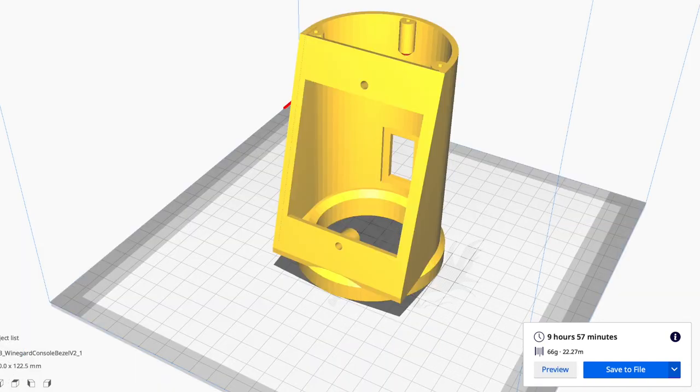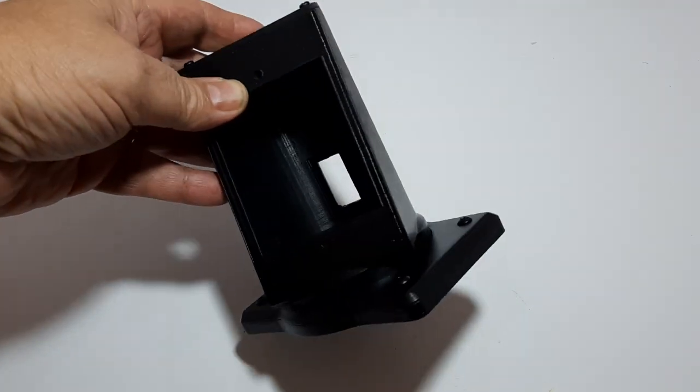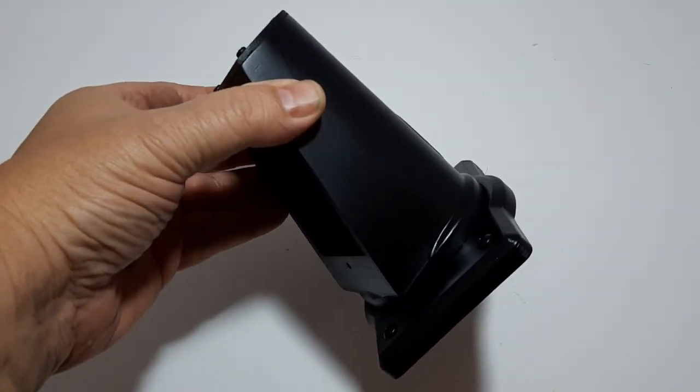And if there is enough interest in how to 3D print RV parts, I can work on a set of videos on what printer to buy, how to set up your printer, and how to 3D print your own parts. And after a couple coats of semi-gloss paint, this is what we end up with.